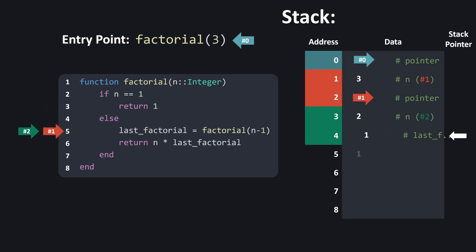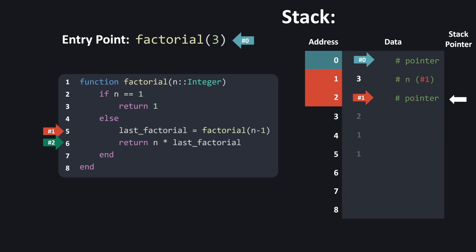We can replace the pointer with the return value of the function we just evaluated, and assign it to the variable last_factorial. The popped pointer allows us to continue execution from line 5, and we still have n equals 2 since it wasn't overwritten. On line 6, we multiply n and last_factorial together to get the return value. We assume this intermediate result is stored in a CPU register. Since we've finished executing, the memory for n equals 2 and last_factorial needs to be cleaned up — we move the stack pointer back. The return value of 2 times 1 is stored in a register and we pop the pointer to know which instruction to execute next, then push the return value 2 onto the stack. We assign this into last_factorial, and on line 6 multiply n equals 3 by last_factorial equals 2, giving a return value of 6.